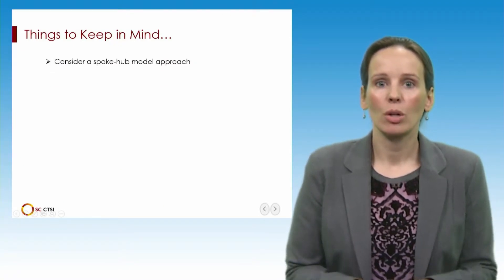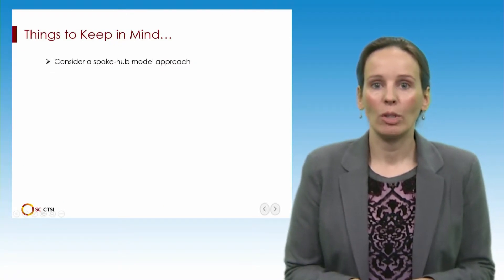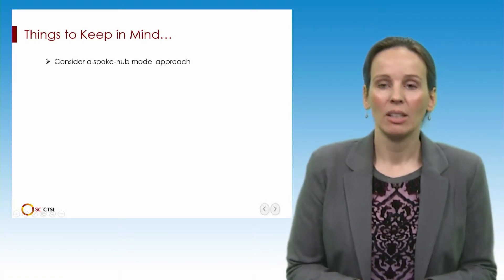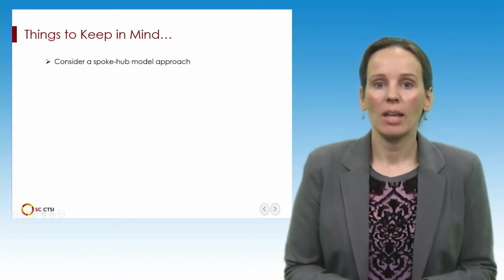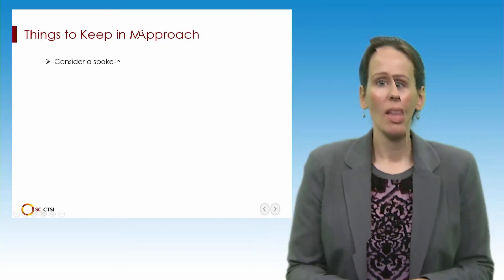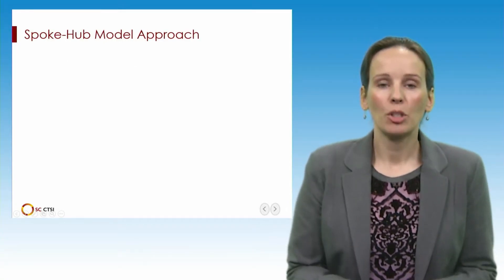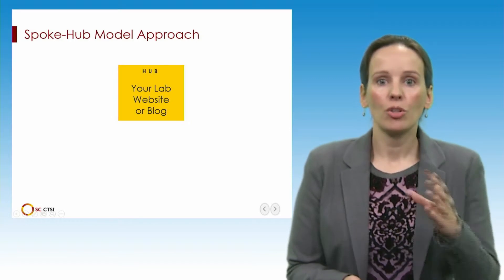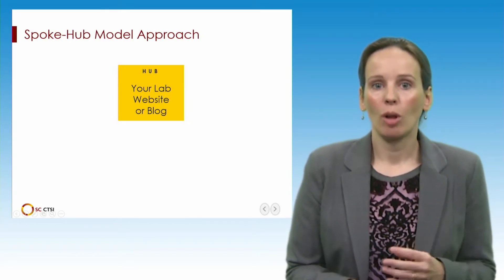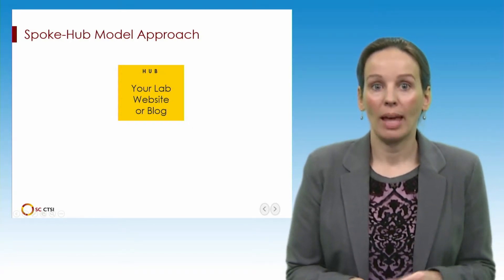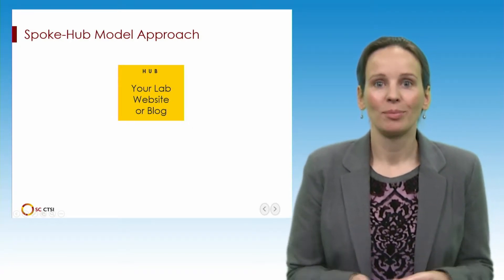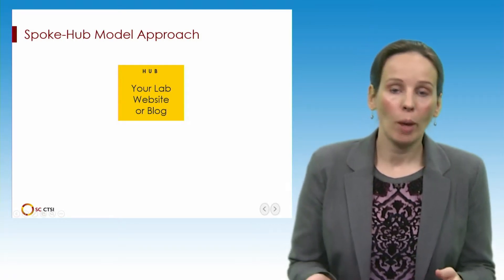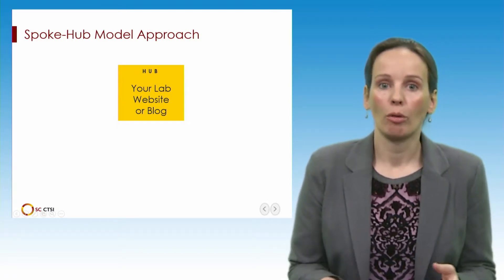There are a few things to keep in mind when you disseminate your work and research outputs proactively. For example, consider using a spoke-hub model approach. The spoke-hub distribution model is a system of connections in which all traffic moves along spokes connected to the hub at the center. The hub or center of your distribution strategy could be your lab website or your blog, for example.